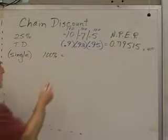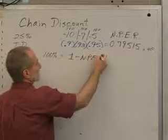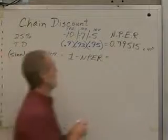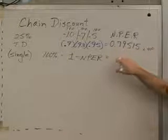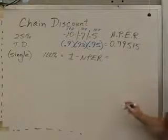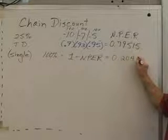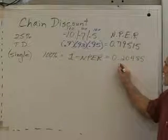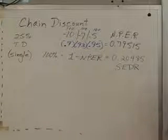So if we take 1 minus that net price equivalent rate, that'll tell us how much we're saving. So take this number, subtract it from 1, or actually you could just say minus 1 equals, and you'll get the right answer with a minus sign in front of it. Does that look right? What do we call this? We call this the single equivalent discount rate.